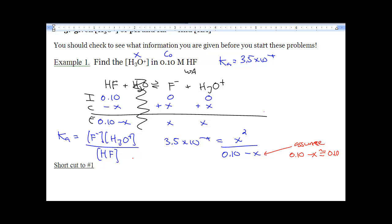So all we're going to do now is we're going to rearrange this to solve for X. So we're going to go X equals 0.10 times 3.5 times 10 to the negative 4, square root to isolate simply X, and we're going to get a final answer of 5.9 times 10 to the negative 3 molar.